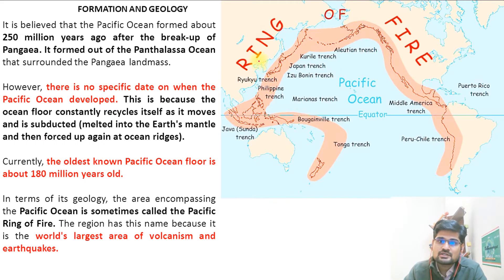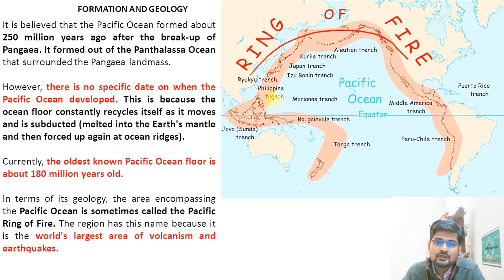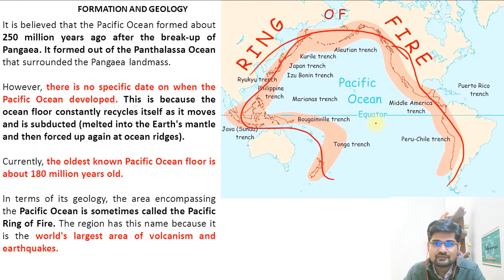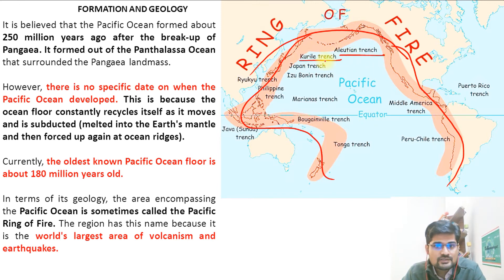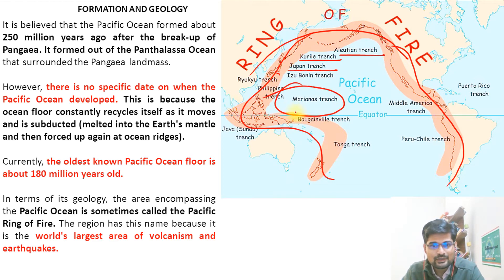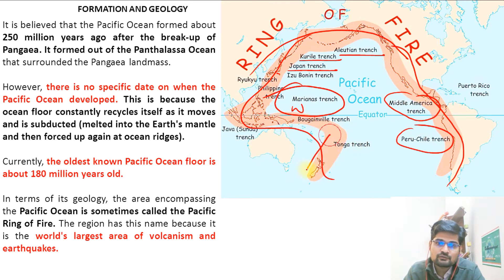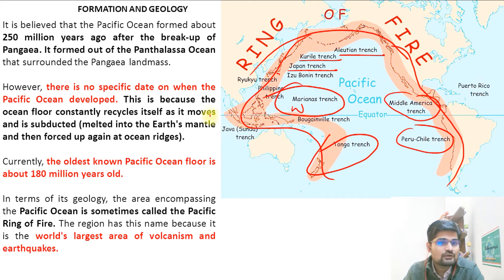Looking at this image of the Ring of Fire, we can see all the major trenches: the Aleutian Trench, Kuril Trench, Japanese Trench, Philippine Trench, and Marianas in the west, the Middle American Trench, Peru-Chile Trench, and the Tonga Trench. These are the major trenches associated with the Pacific Ring of Fire.